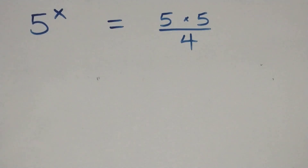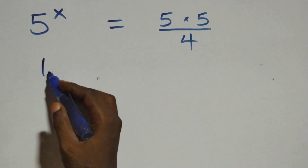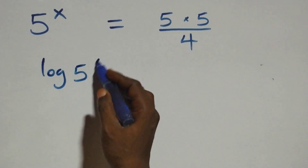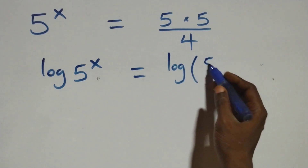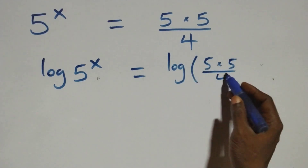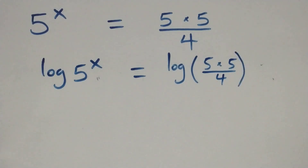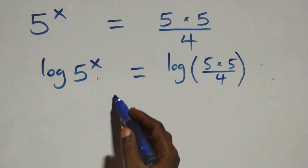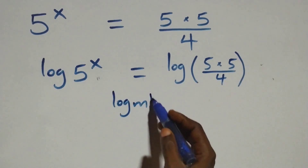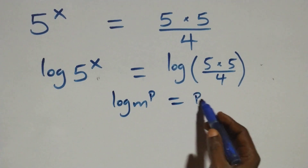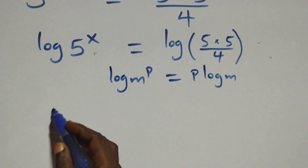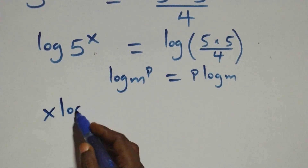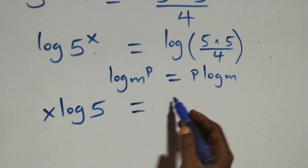The next step: we take the log on both sides. So log of 5 raised to power x equals log of 25 over 4. We apply the power rule of logarithms — when we have log m to power p, it's the same thing as p log m. So we have x log 5 equals log of 25 over 4.